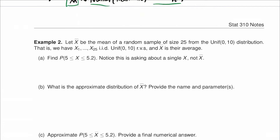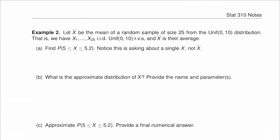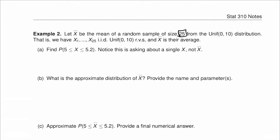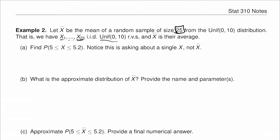Let's see another example. Let x̄ be the sample mean of a random sample of size 25 from the Uniform(0, 10) distribution. That is, we have 25 iid Uniform(0,10) random variables x1 through x25, and x̄ is their average. We have to find the probability that x is between 5 and 5.2.